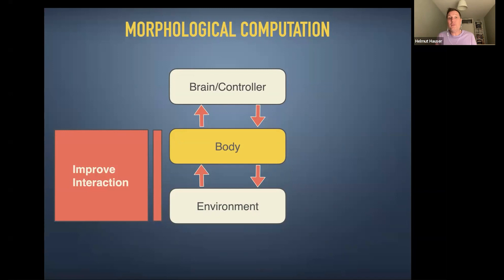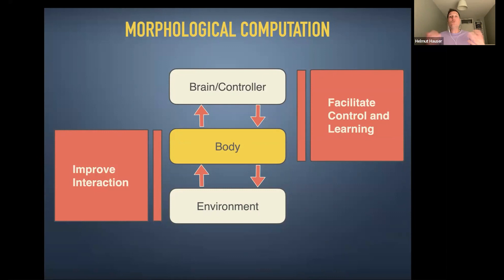Can we help to extract information from the environment in a more reliable way? The other side of the coin is looking at how we can build bodies that help us facilitate control. Can we outsource control to the morphological structure? And can a clever body help us accelerate learning? I'd like to give examples from both robots and also share some general theoretical understanding of morphological computation.